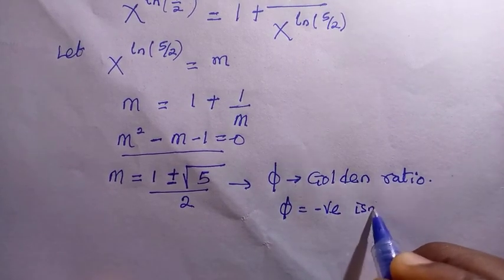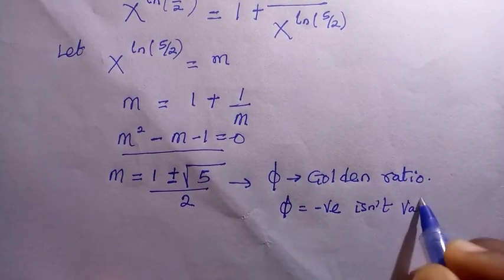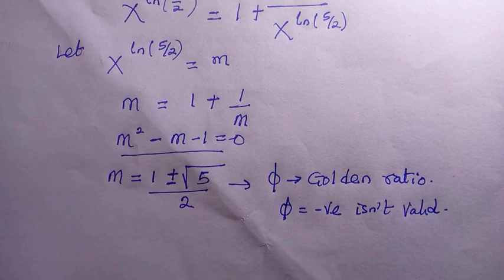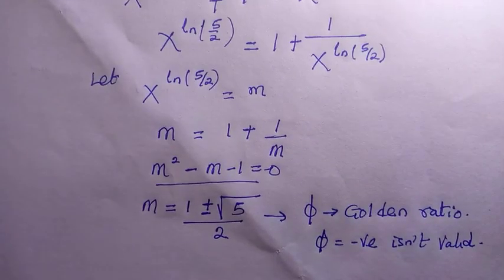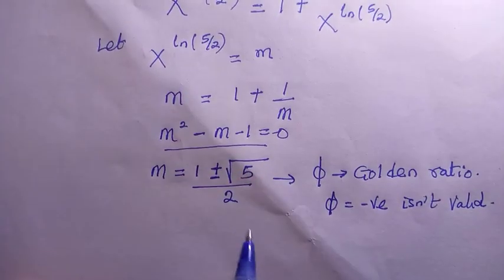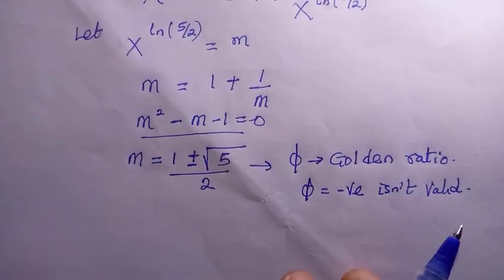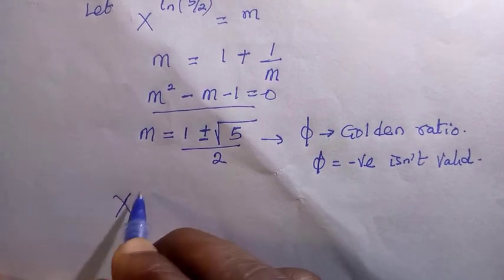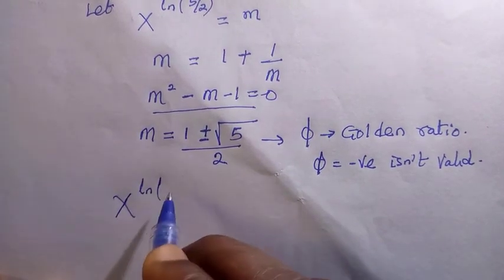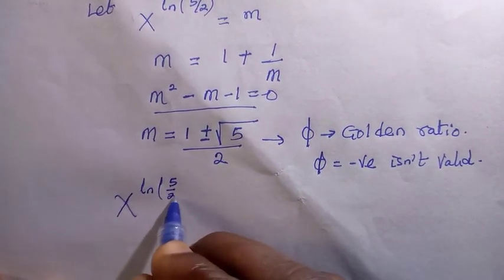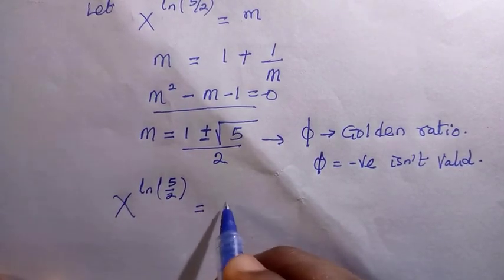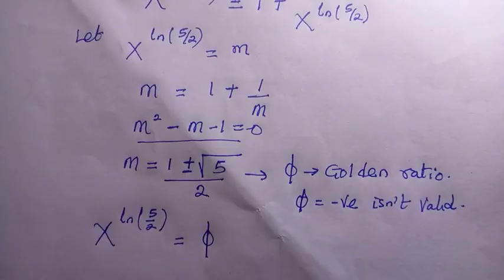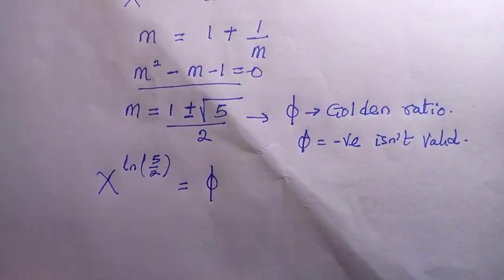We check that the negative solution is not valid for this problem, so we go with only the positive one. Since we have the value of m as phi, we replace m back where we let x raised to the power of ln(5/2) equal m — replacing it with phi.